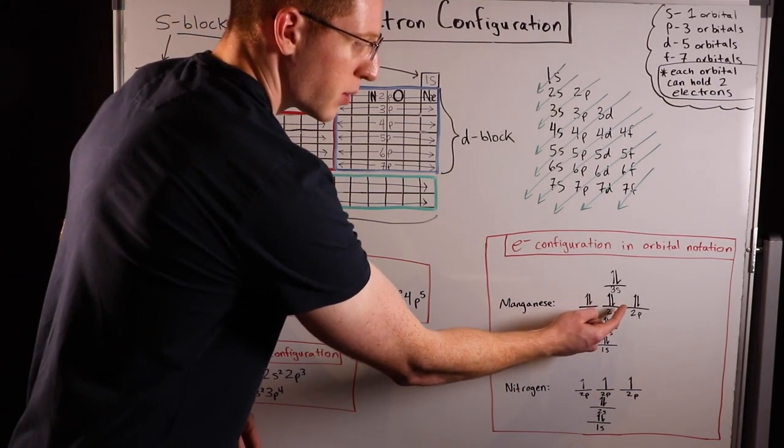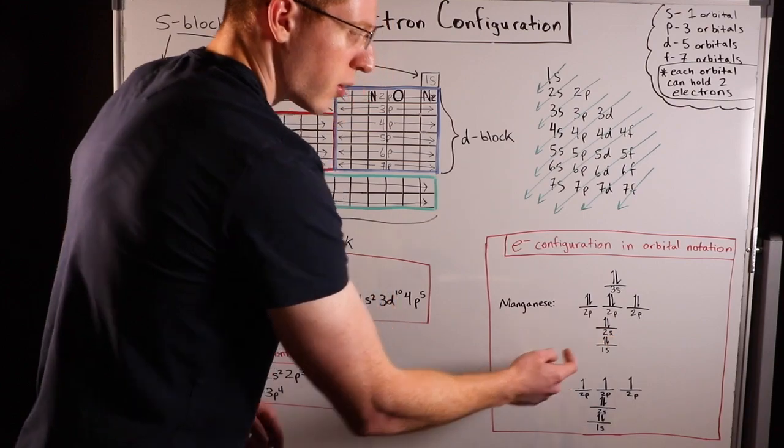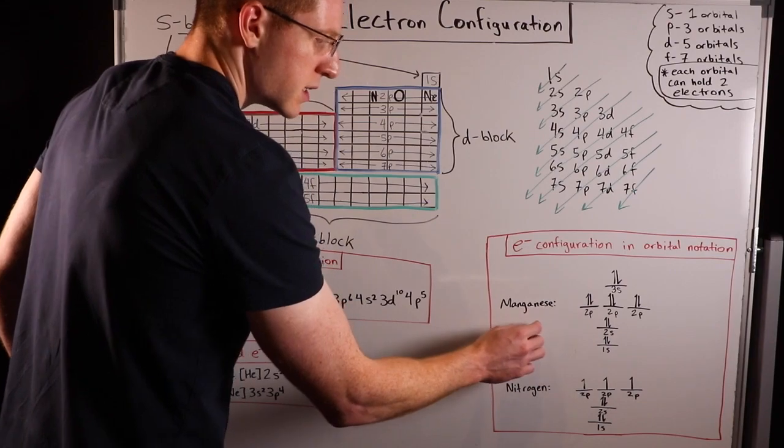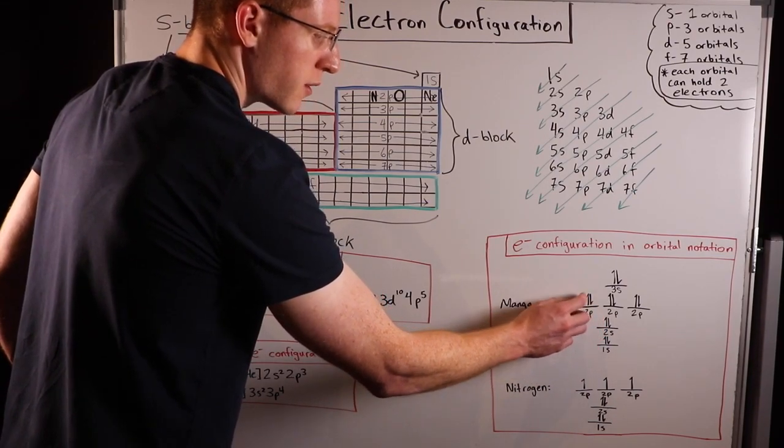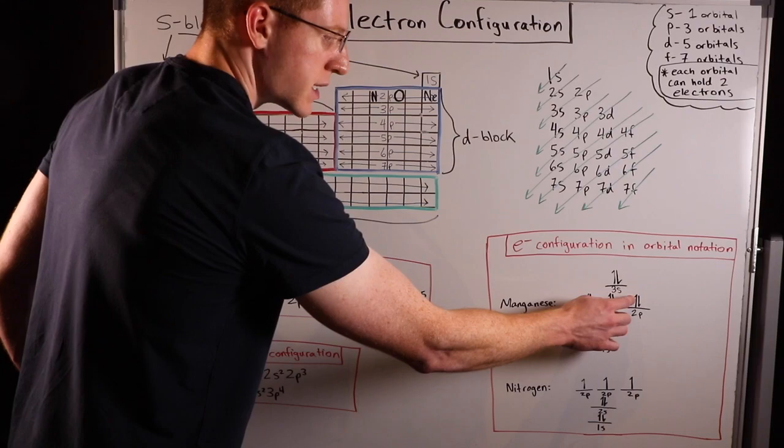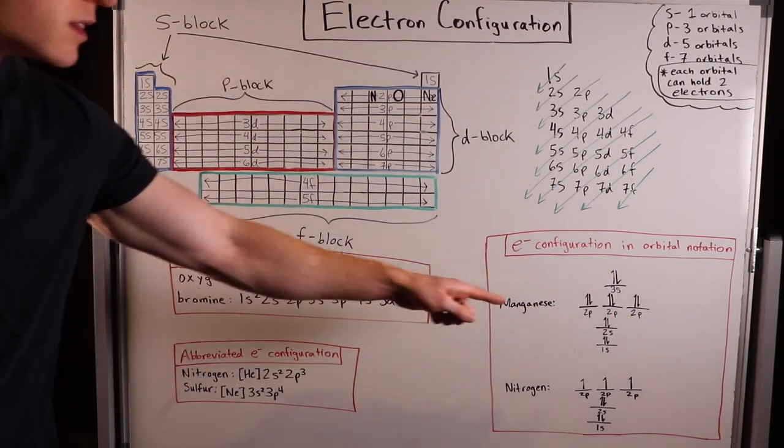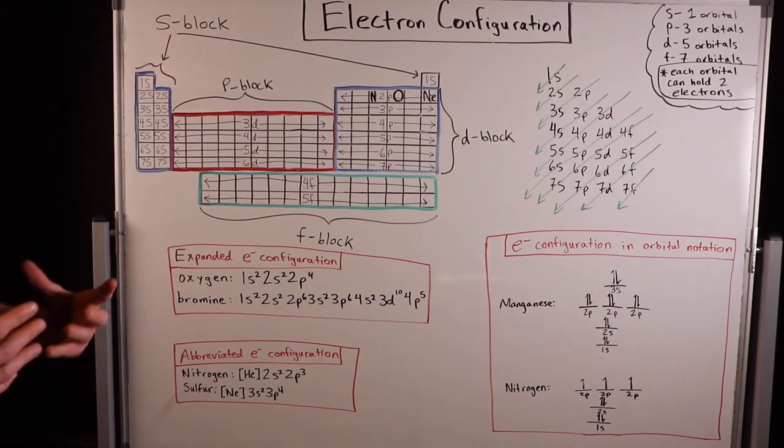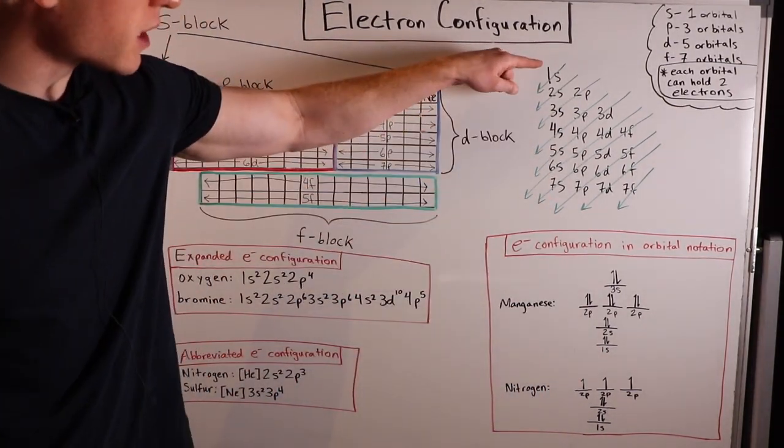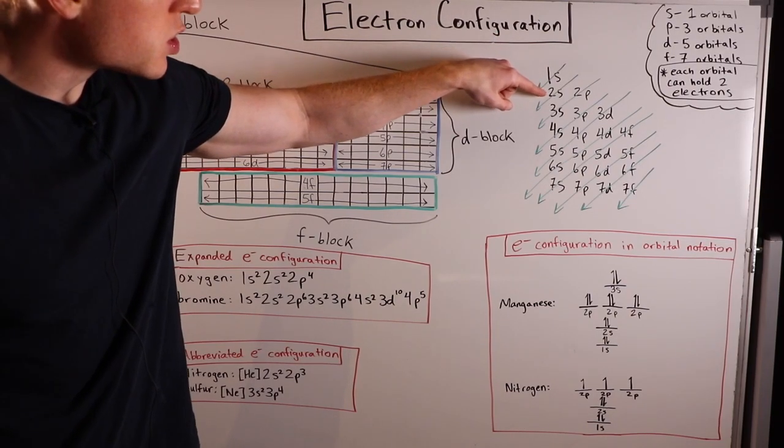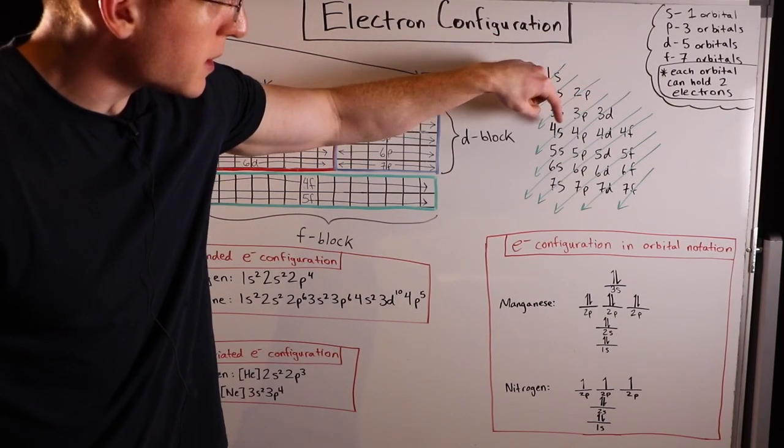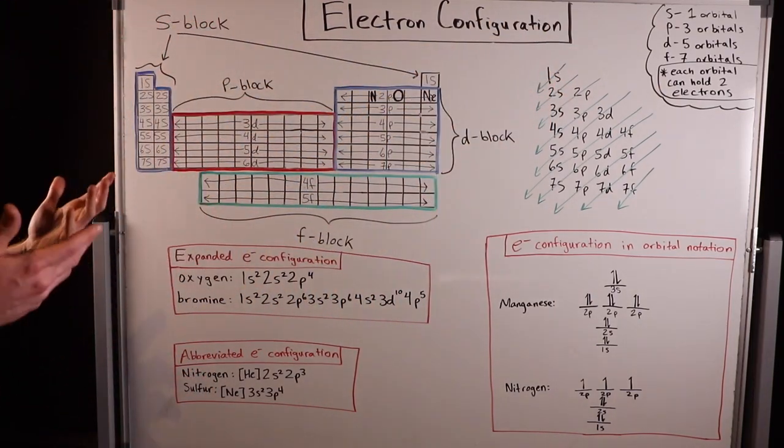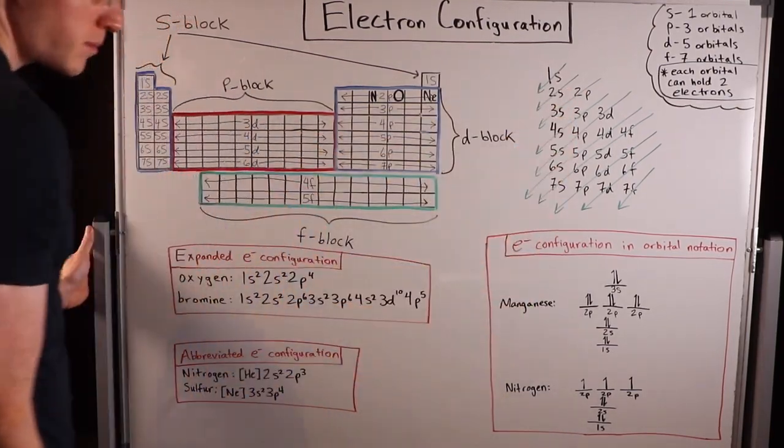We know each orbital contains 2 electrons. So that means manganese contains 1, 2, 3, 4, 5, 6, 7, 8, 9, 10, 11, 12 electrons total. This shows how they're distributed into manganese's electron orbitals. Notice how it follows this pattern here: 1s, 2s, 2p, 3s, 3p. We actually didn't get to 3p, but if we did, we would continue on in this order.